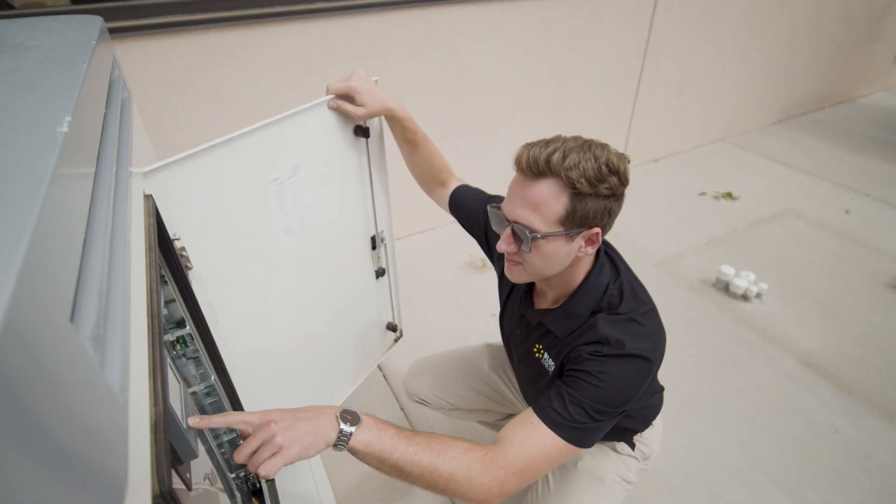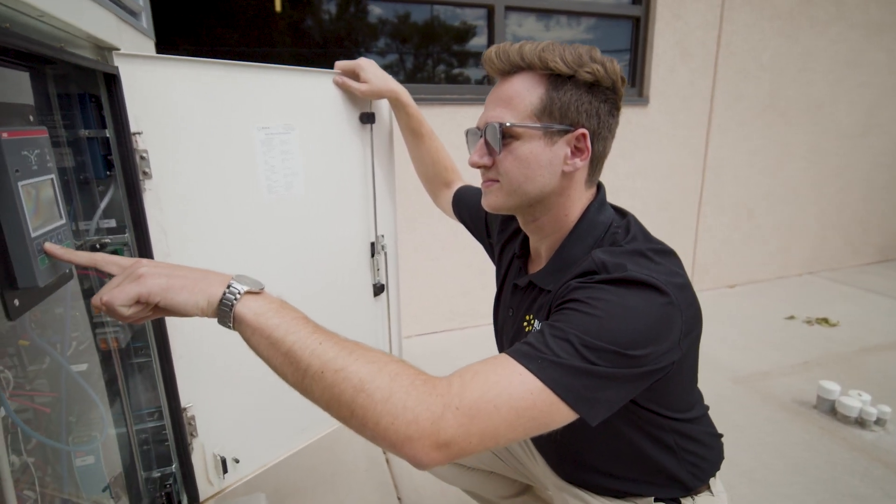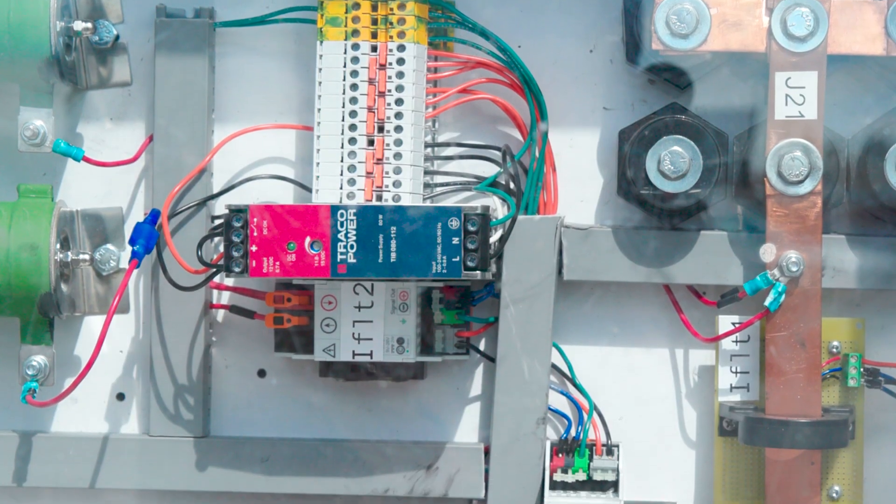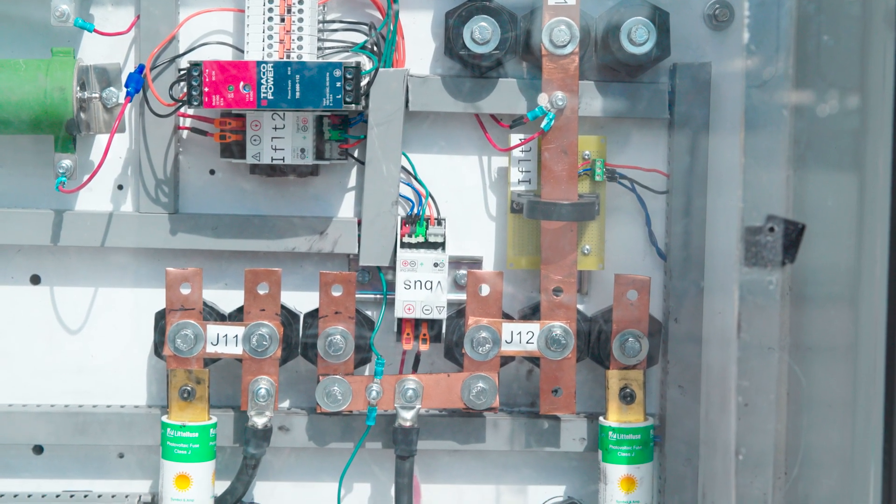PV and energy storage are distributed throughout the microgrid, serving building loads on base. The testbed is configured in such a way that we can conduct fault detection and protection tests on the system without disturbing load delivery to the buildings.